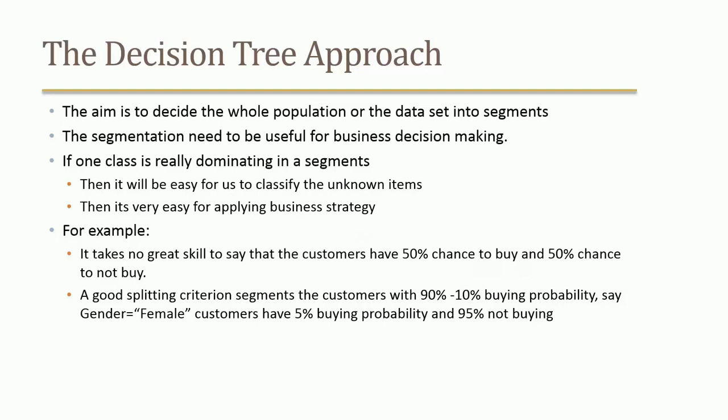The decision tree approach aims to divide the whole population into segments where each segment is useful for business decision-making. That means each segment needs to be pure — one class should strongly dominate. If we split the population into two groups where one has more buyers and the other has more non-buyers, it becomes easy to apply a targeted business strategy.